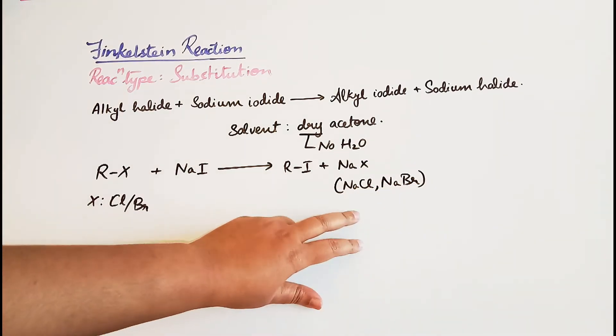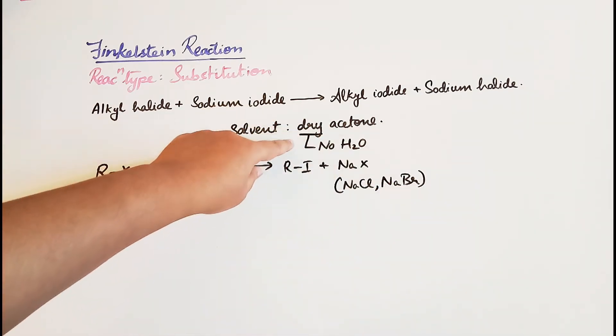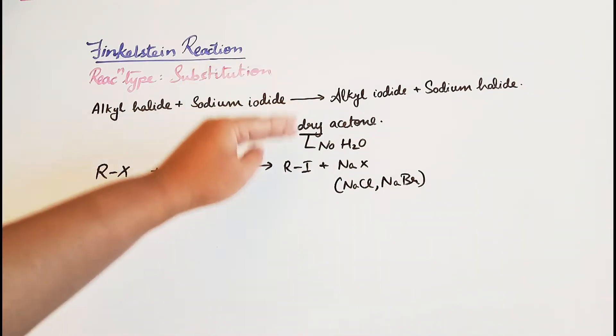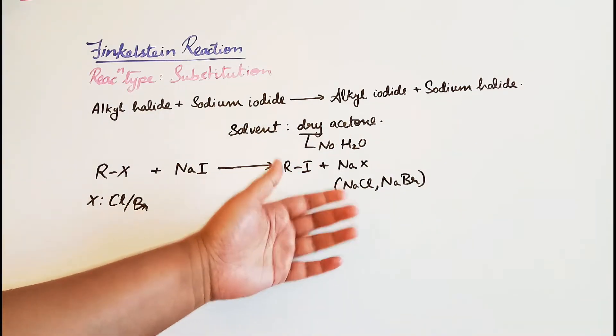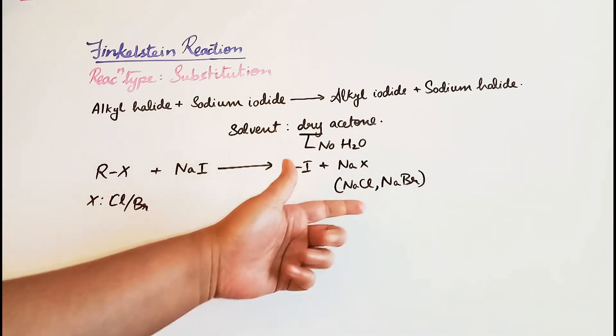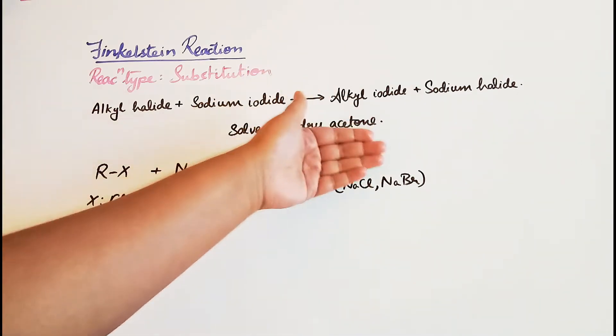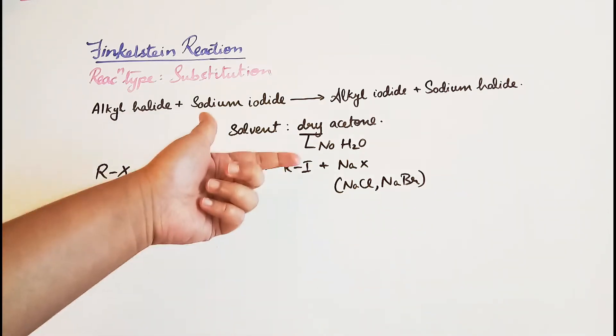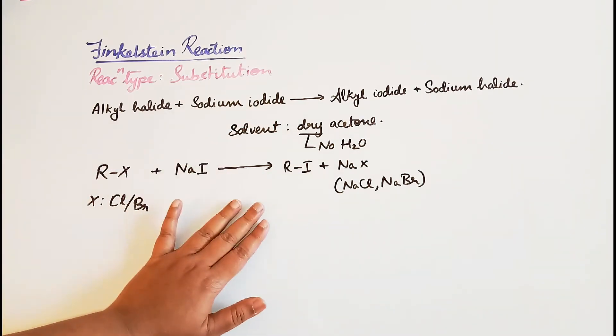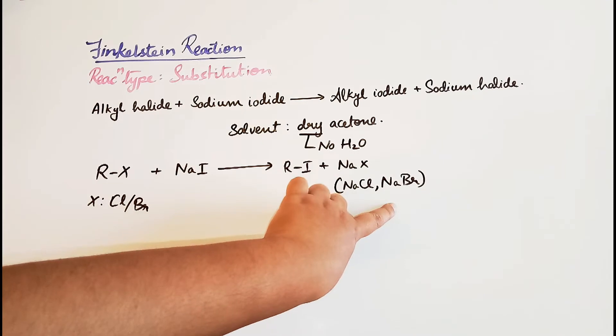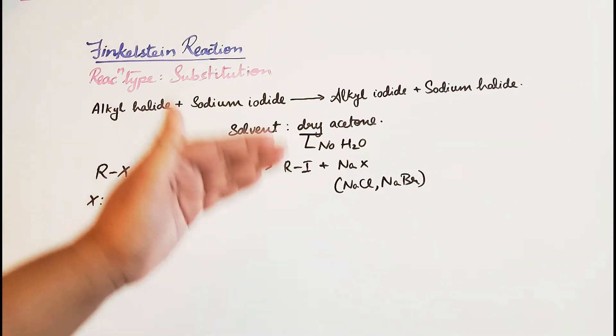Sodium chloride and sodium bromide are insoluble in dry acetone, and that is what drives this reaction forward. If NaCl or NaBr were soluble in the solvent, the reaction could go backward to form sodium iodide and the initial alkyl halide reactant. In dry acetone, only R-X and the reactants remain, while NaCl and NaBr are insoluble.